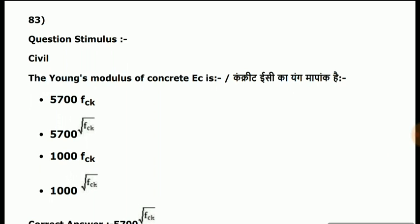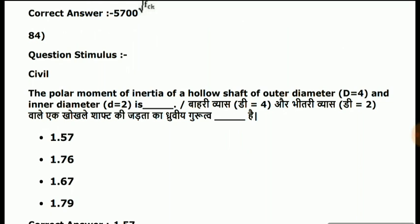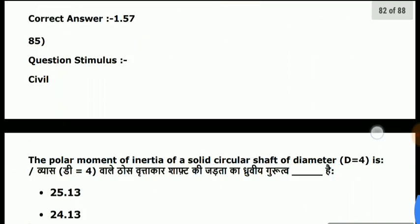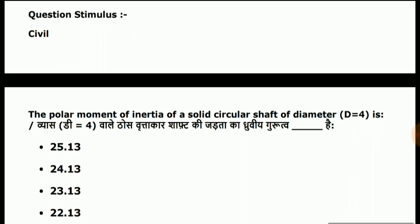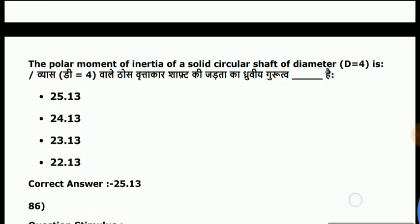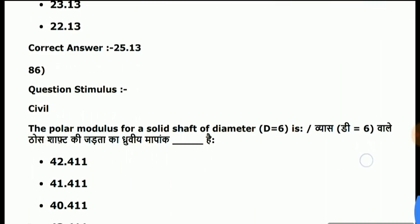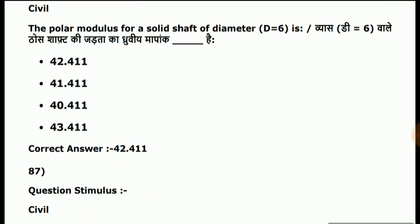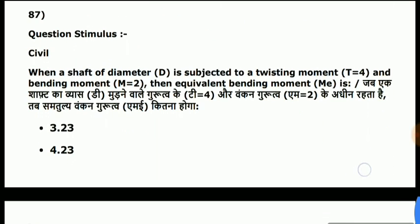Question 78: the Young's modulus of concrete Ec is 5700√fc. Question 84: the polar moment of inertia of a hollow shaft of outer diameter d = 4 and inner diameter d = 2 is 1.75π. Question 85: the polar moment of inertia of a solid circular shaft of diameter d = 6 is 42.411.